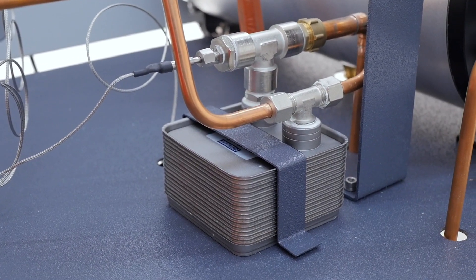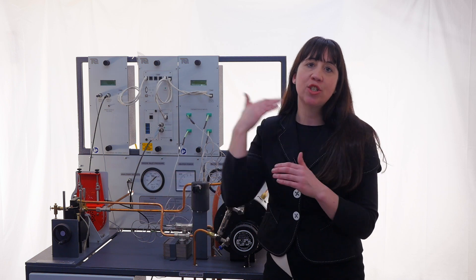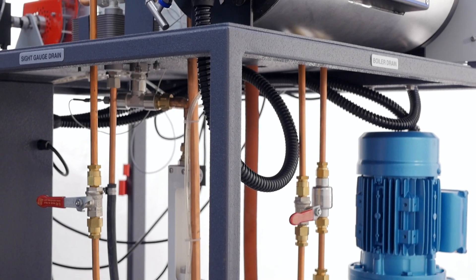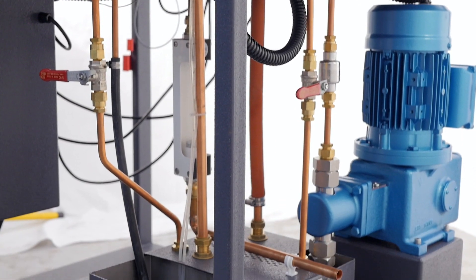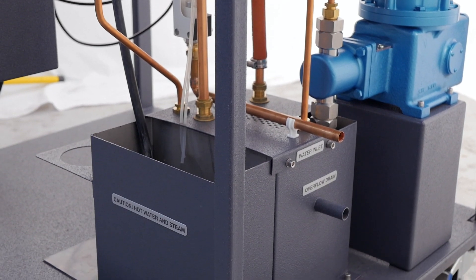The exhaust steam from the engine passes through a condenser which is the heat exchanger. Cooling water circulates through the heat exchanger cooling the exhaust steam. The steam condenses and drains out of the connection below the condenser to the condensate collector or to the waste tank next to it.